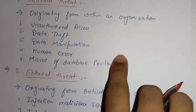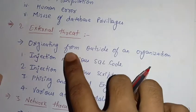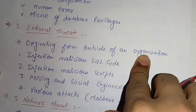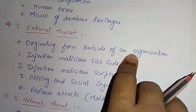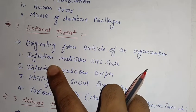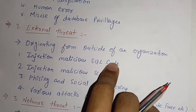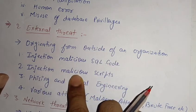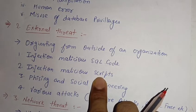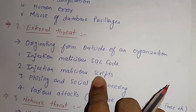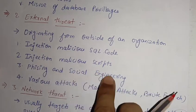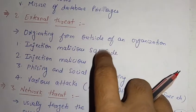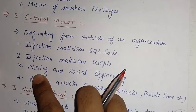Now moving to the second one — external threat. These are basically originating from outside of an organization, done by outsider persons. They carry out this threat by injecting malicious SQL code into the system or software, which gives a threat to the database. The second method is injecting malicious scripts into the database or software. The third one is phishing and social engineering — phishing means clicking on unauthorized websites or links that are not from a proper source.